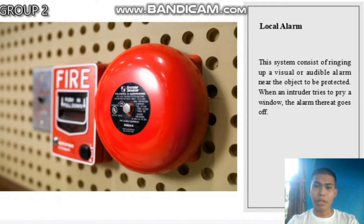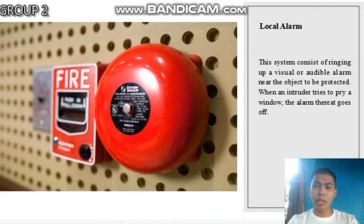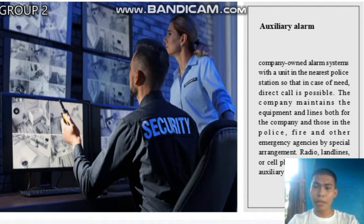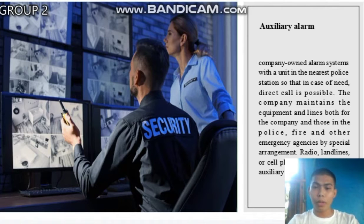Local alarm: This system consists of triggering a visual or audible alarm near the object to be protected. When an intruder tries to pry open a window, the alarm goes off. The next is the auxiliary alarm: company-owned alarm systems with a unit in the nearest police station, so that in case of need, recall is possible. The company maintains the equipment and lines both for the company and for the police. Fire and other emergency agencies, by special arrangement, can use radio, landlines, or cell phones to avail of the auxiliary system.